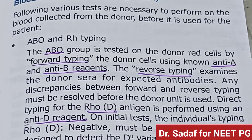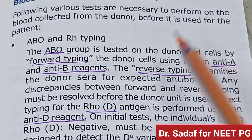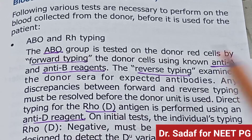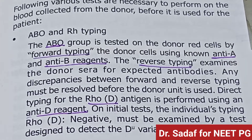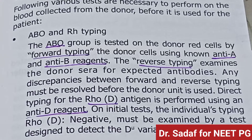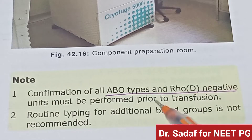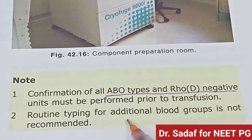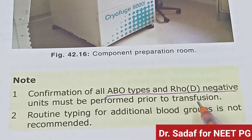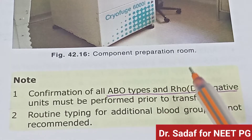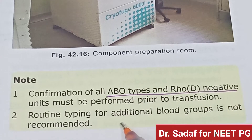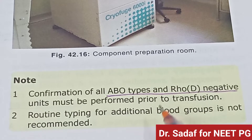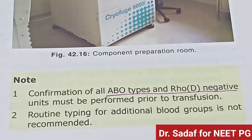Direct typing for the Rh(D) antigen is performed using an anti-D reagent on initial testing. Individuals typing Rh(D)-negative must be examined by a test designed to detect the D variant. Confirmation of all ABO types and Rh(D) antigen on units must be performed prior to transfusion. Routine typing for additional blood groups is not recommended.